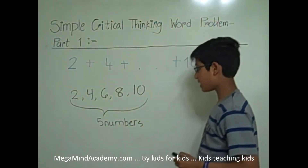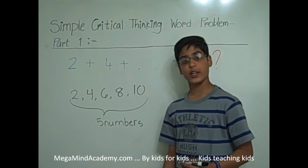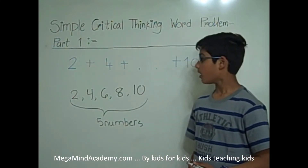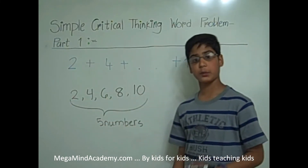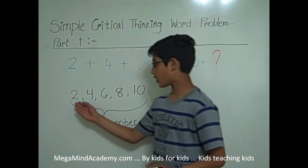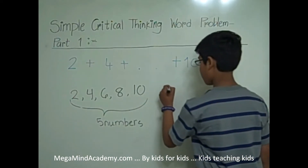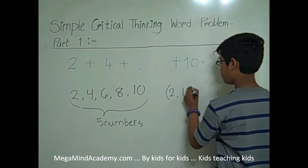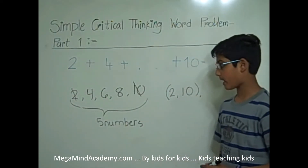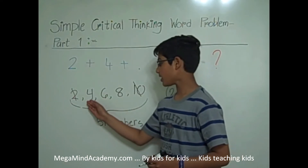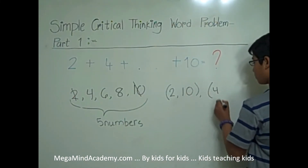The next part to solving this equation is finding the pairs. To find the pairs, we need to take the first number and the last number to make up each pair. So the first pair is 2 and 10. Now let's cross off 2 and 10. The next pair is 4 and 8, because they are the smallest and the largest numbers that are not crossed out. So, 4 and 8.